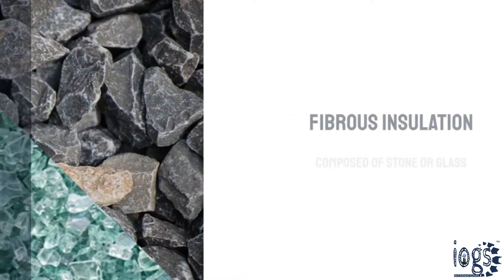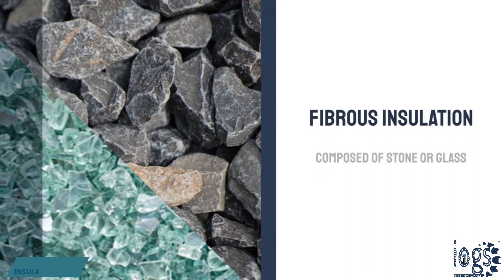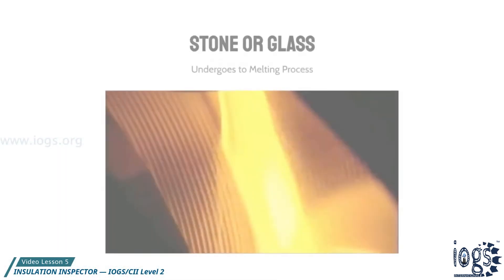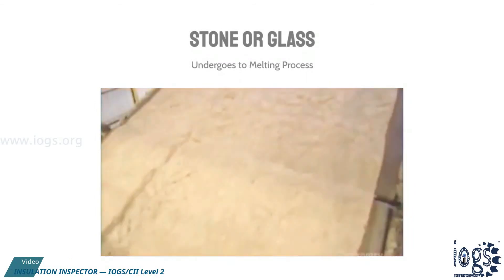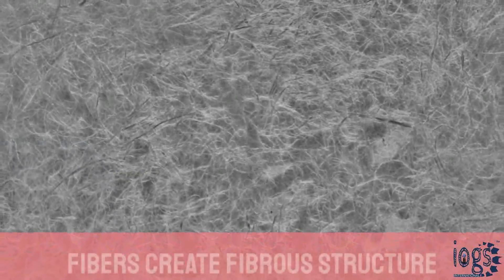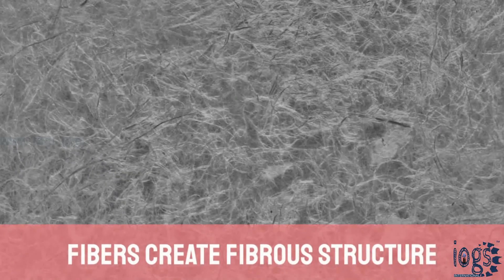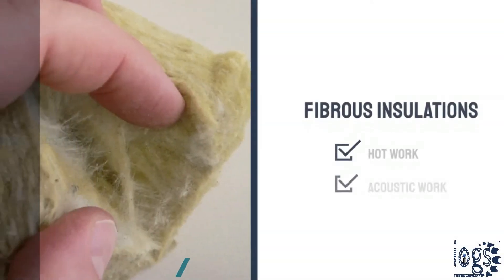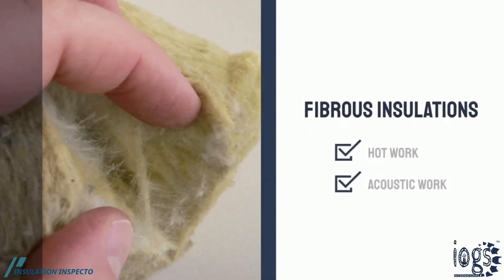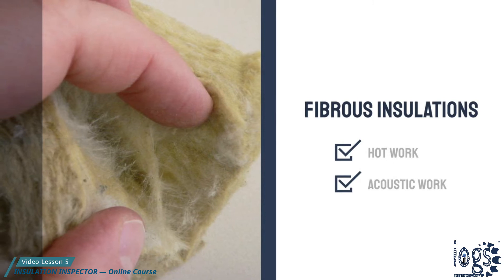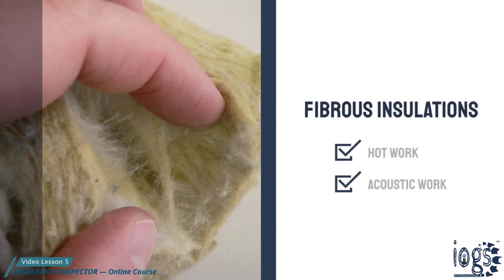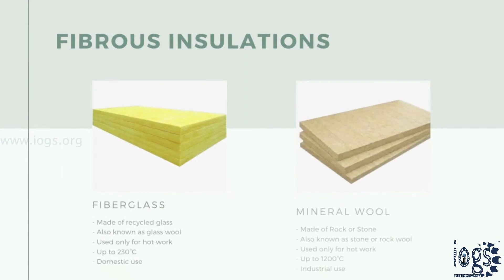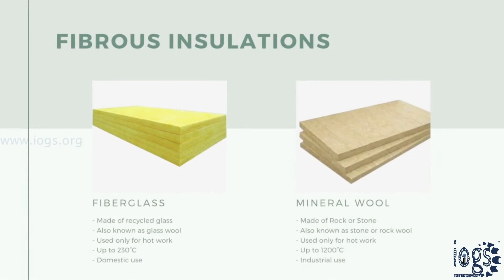Fibrous insulations are composed of stone or recycled glass, which undergoes a process of melting to create small diameter fibers. The insulation materials made of these fibers create a fibrous structure. Fibrous insulations are mostly used for hot insulation work but are also suited for acoustic work.